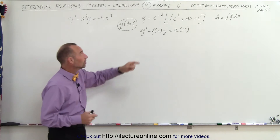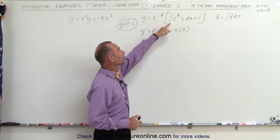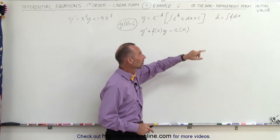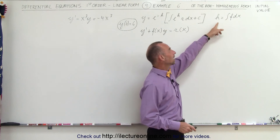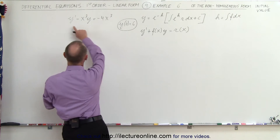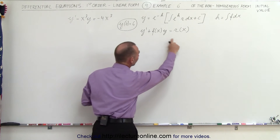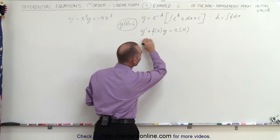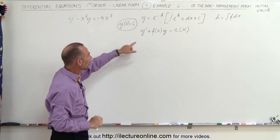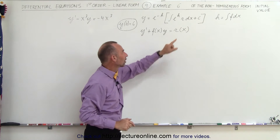The general solution is here: y is equal to e to the minus h times the integral of e to the h times r dx, plus the constant. Here h is defined as the integral of f dx. Remember that this differential equation is in this general linear form of a first-order equation: y prime plus f of x times y equals r of x.